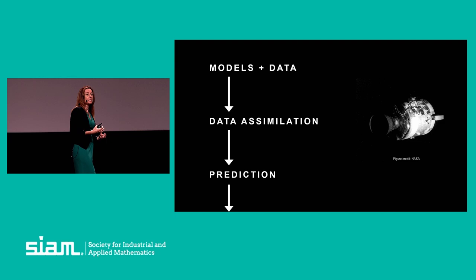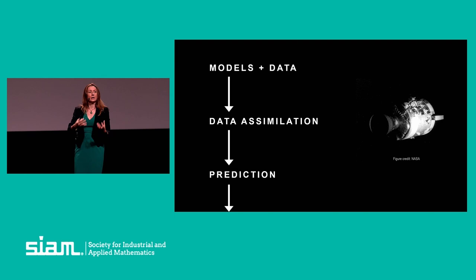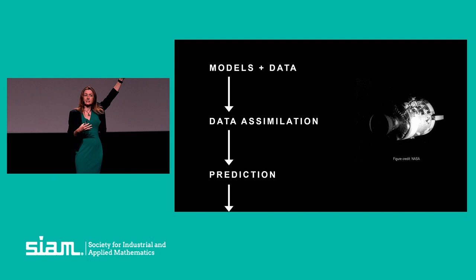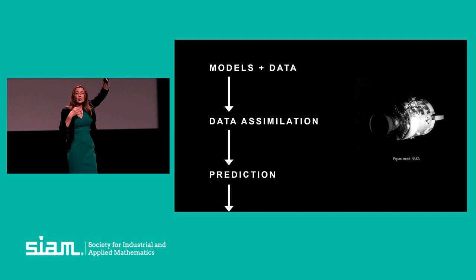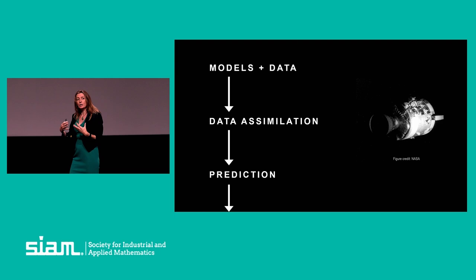The idea is that you have a model — in this case the simulator on the ground — and you can take data from a physical system, bring that data into the model, and change the model so that it's updated to reflect changing properties of the physical system. Data assimilation is very powerful because it lets you personalize the model to a particular system and to the dynamic situation taking place. That then brings us to the fourth element: prediction. Because we now have a personalized model, we can make predictions tailored to the particular situation at hand.